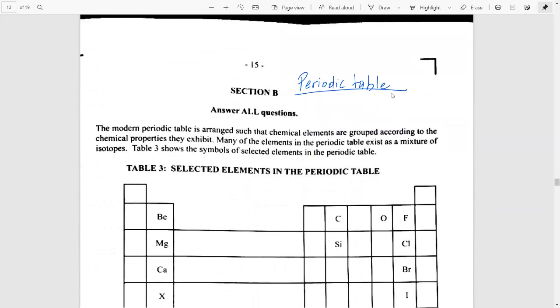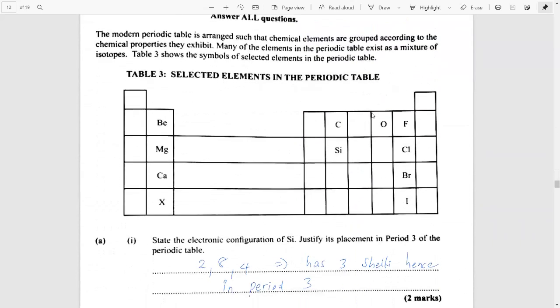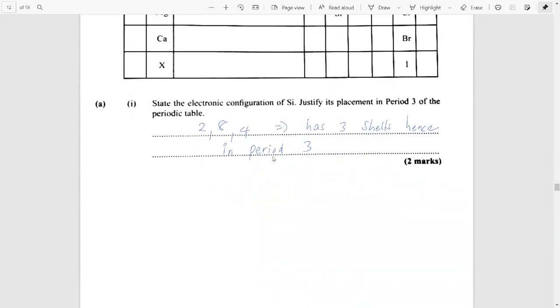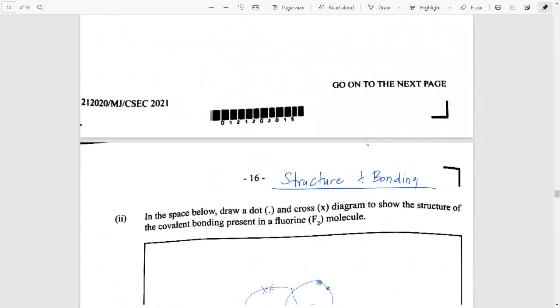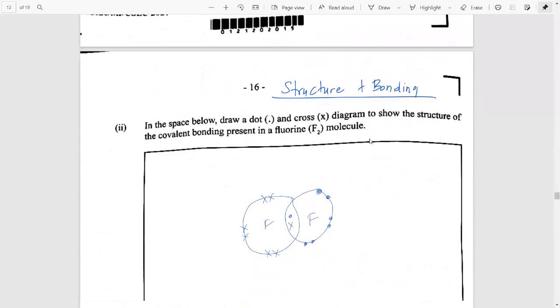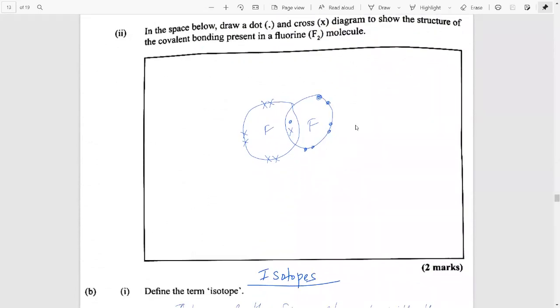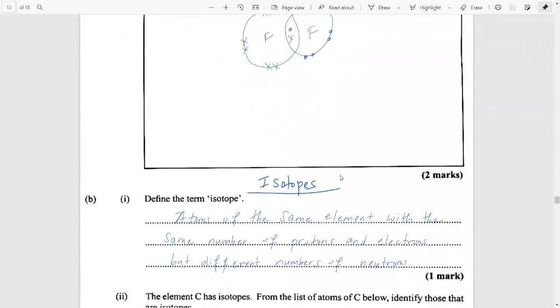Next, you had a question on the periodic table. And this was asking why silicon was placed in period three. And I hope you were able to justify that by the fact that it had three shells. And you did get a question on structure and bonding, where you were asked to show the dot and cross diagram for a molecule of fluoride.